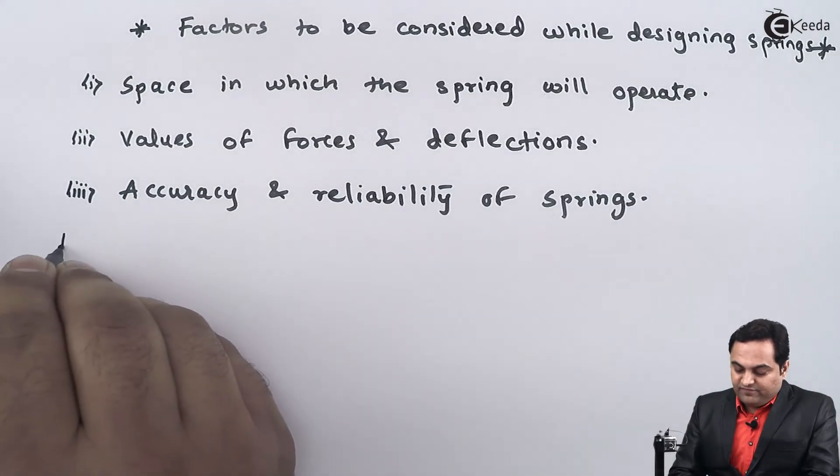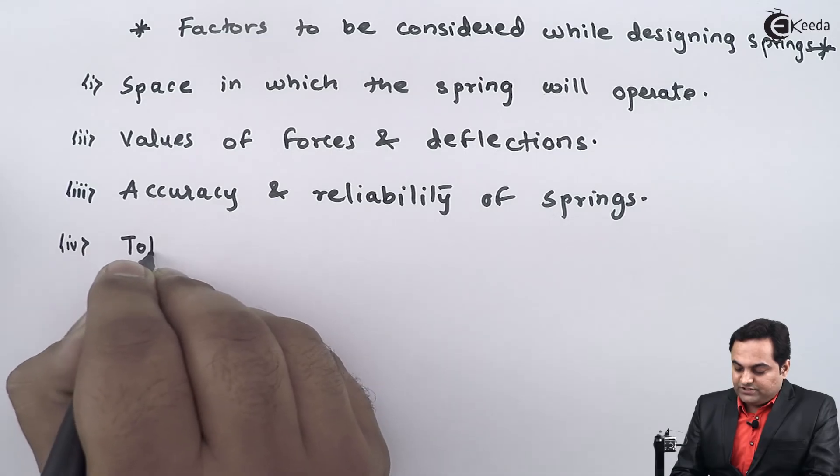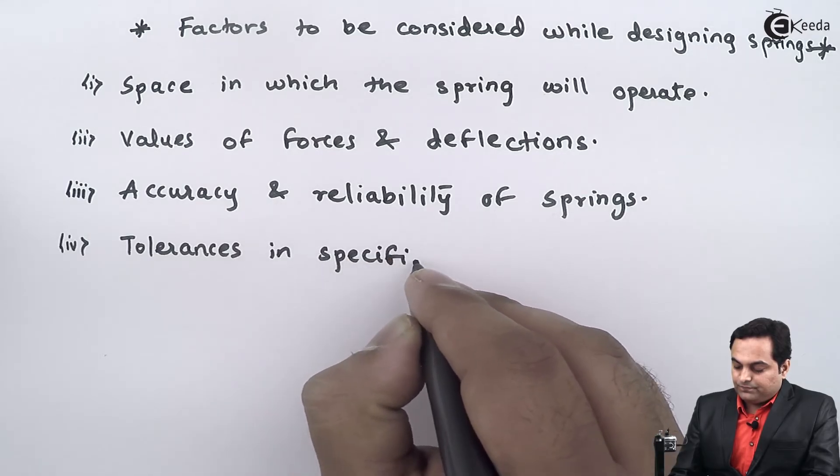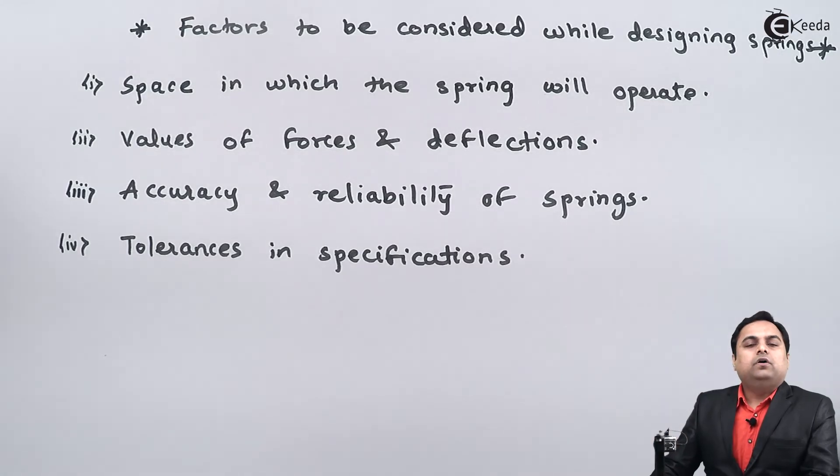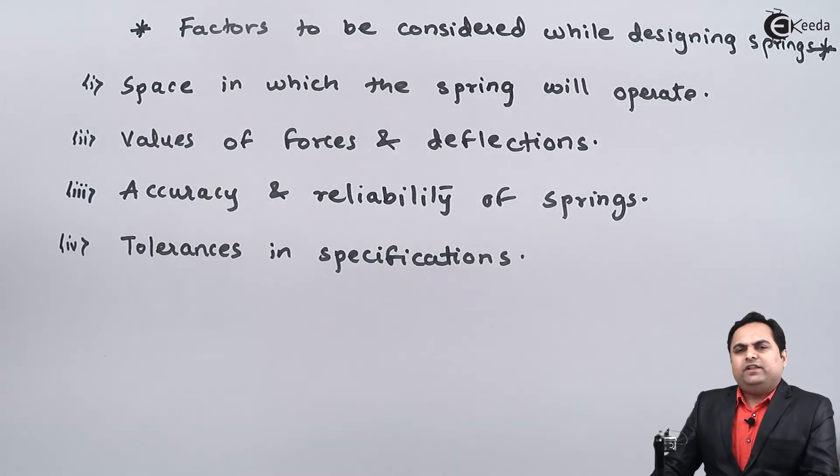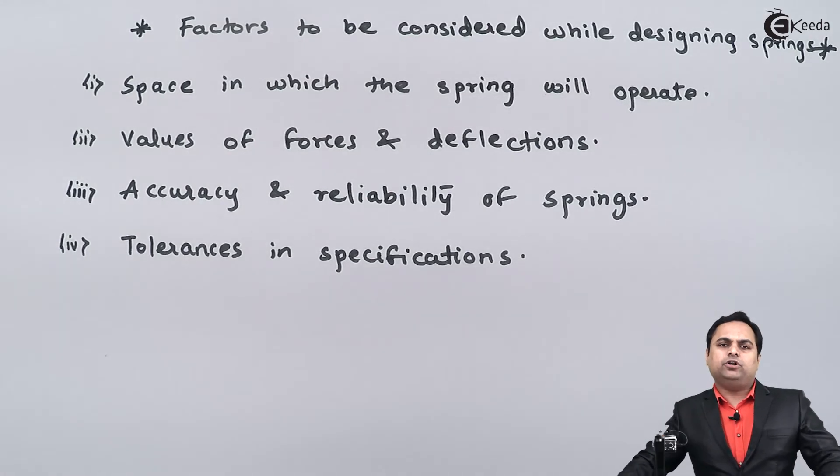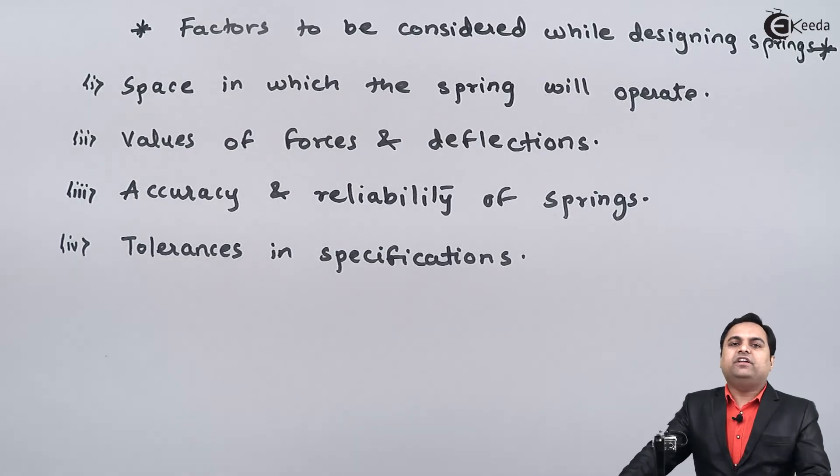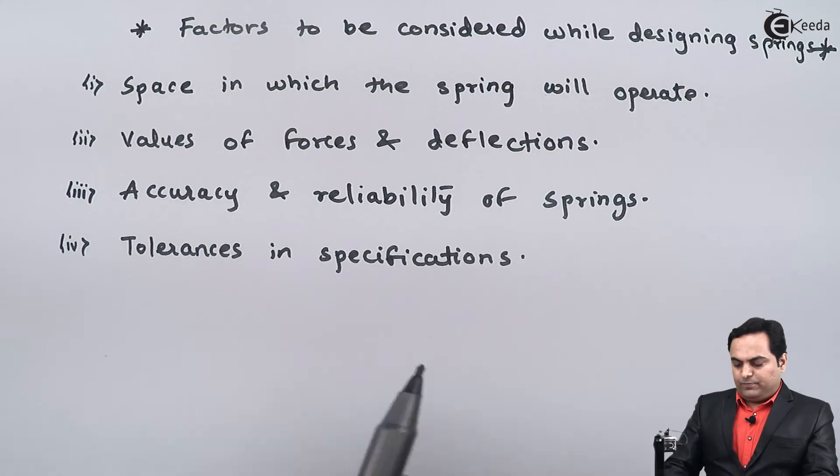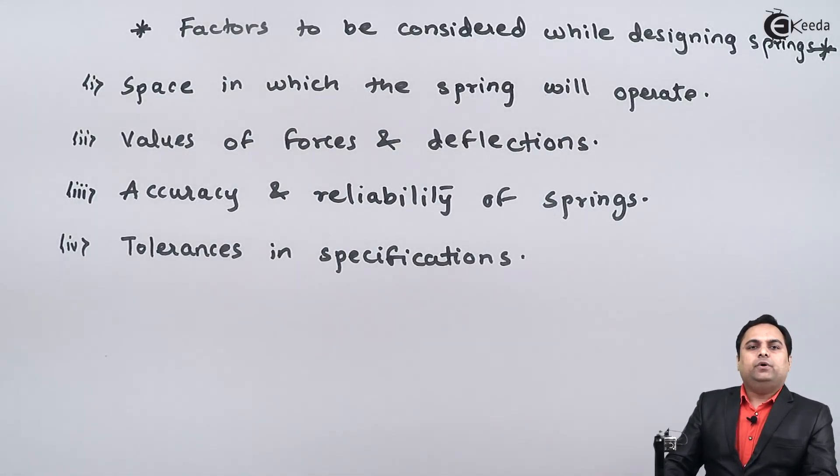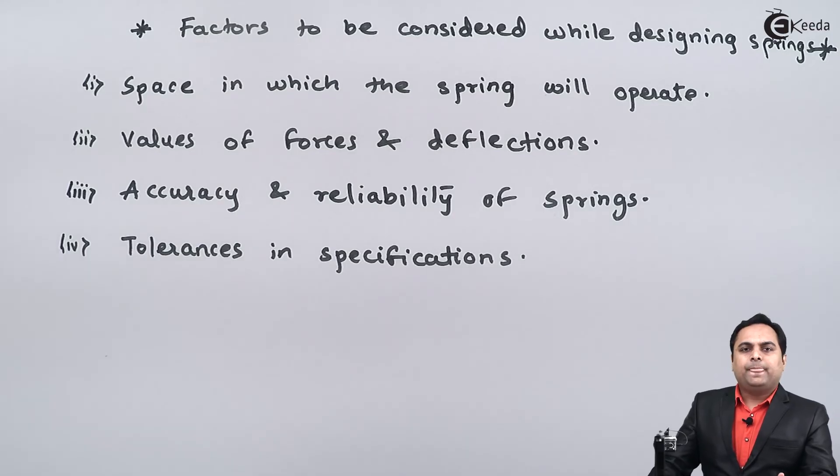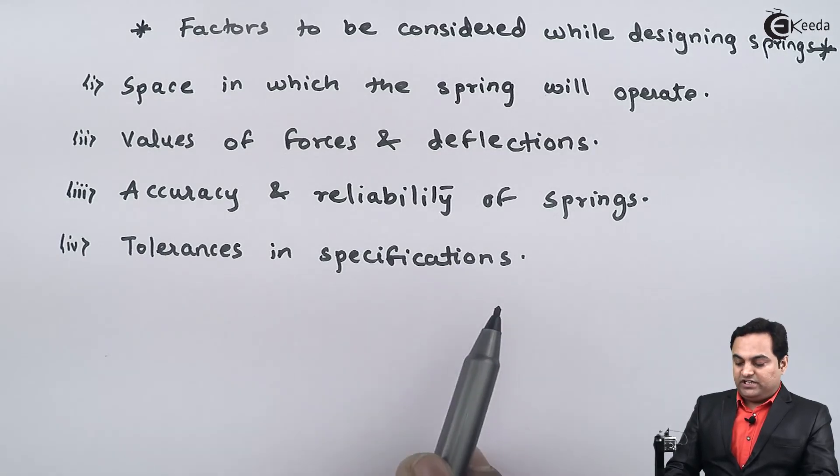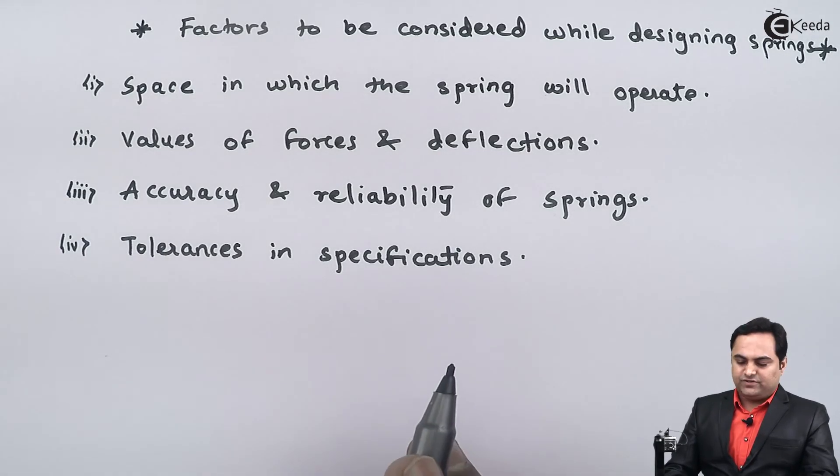Next, we have tolerances in specifications. Tolerances, whenever we are manufacturing any kind of an object or a product, it cannot be made to exact size. There would be some variations and that is why we provide tolerances so that we can get the value within some range. So while designing the spring we have to even take care of the tolerances which are given in the specifications, that is the dimensions of the spring.